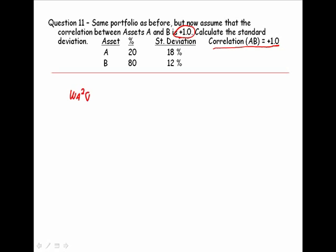w_a squared sigma_a squared plus w_b squared sigma_b squared plus 2 times w_a times w_b sigma_a sigma_b correlation between assets A and B, and then we have to take the square root.